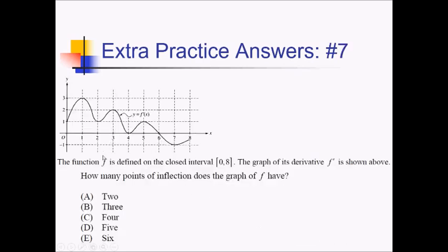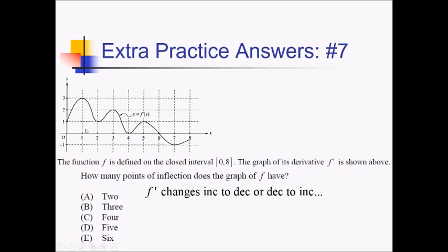On this problem, we're given the function f whose derivative f prime is shown in the graph. We want to know how many points of inflection the graph of f should have. Points of inflection are going to happen wherever f prime is changing from either increasing to decreasing or decreasing to increasing. So how many times does f prime reverse direction in this graph? Let's count: one, two, three, four, five, and six. So f has six points of inflection, which leads us to answer choice E.